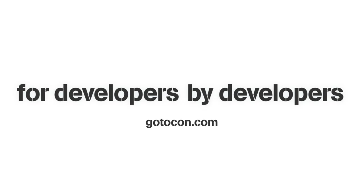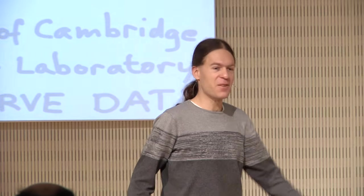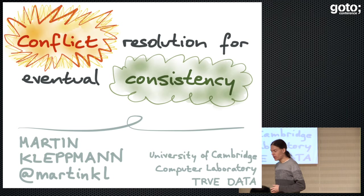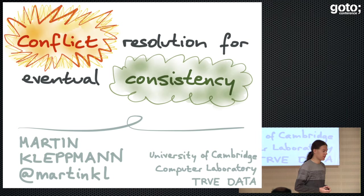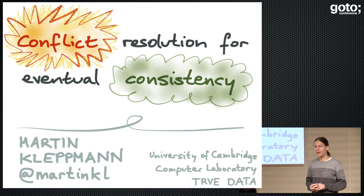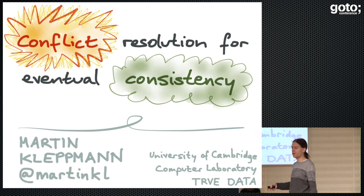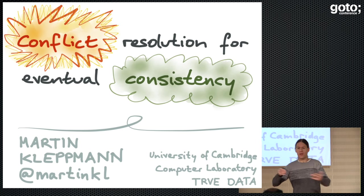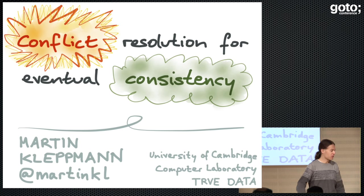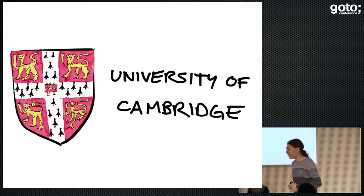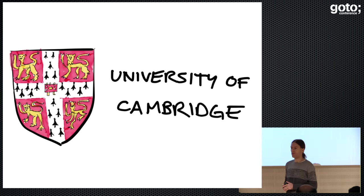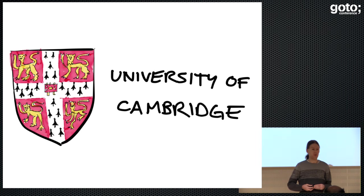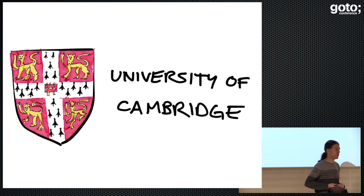Hello, everybody. Thank you very much for coming. Good morning. I hope you're doing well. I'd like to talk today about conflict resolution in distributed systems — that is, if several people change some data at the same time, independently of each other, what happens? How do we resolve those conflicts that occur? My background is I'm a researcher at the University of Cambridge. I was previously in industry in a bunch of internet startups, so I worked at LinkedIn for a couple of years, for example.